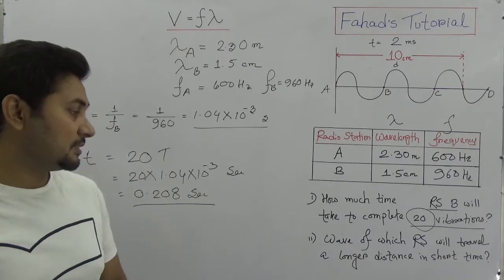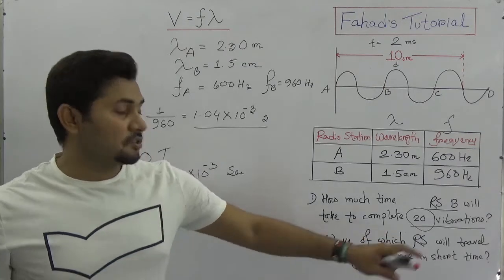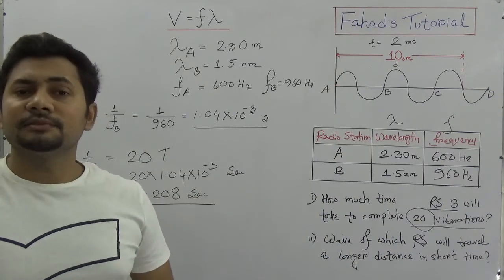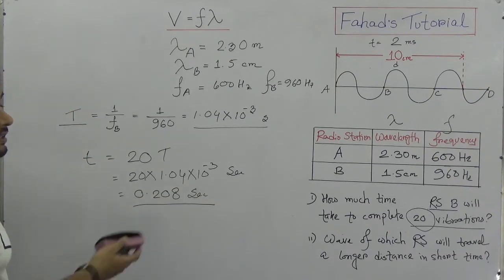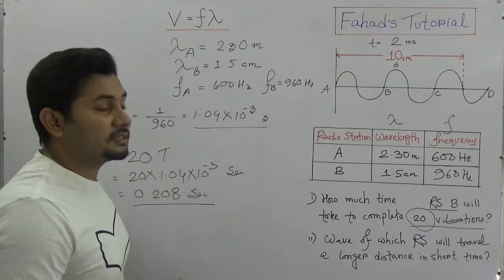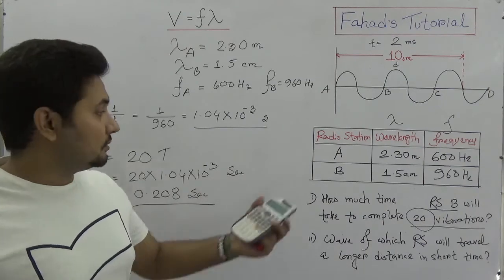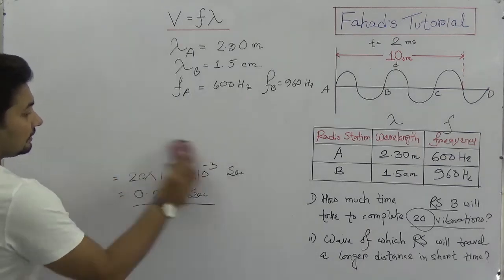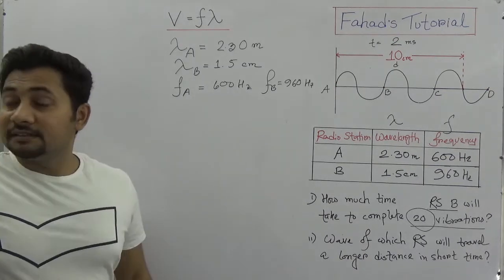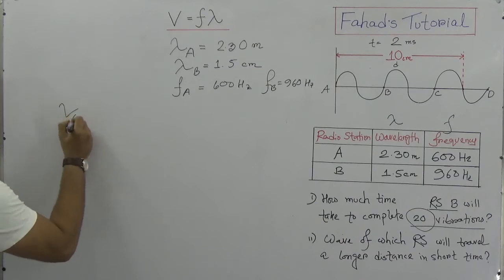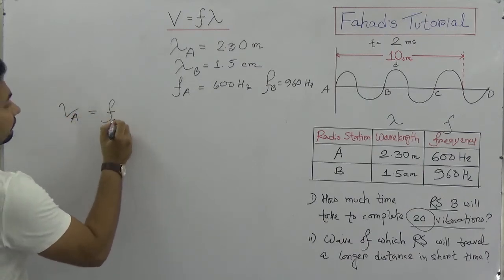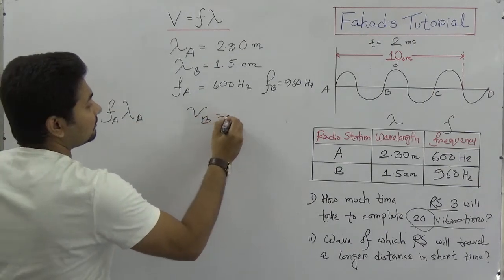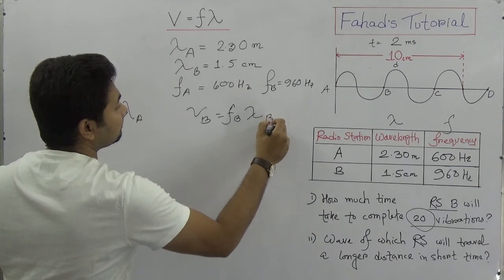The next question is: which radio station's wave will travel a longer distance in a shorter time? We need to think about velocity — which radio station's wave has greater velocity. We need to find out the velocity of each. The velocity of radio station A is V_A = F_A × λ_A, and the velocity of radio station B is V_B = F_B × λ_B. All values are given.